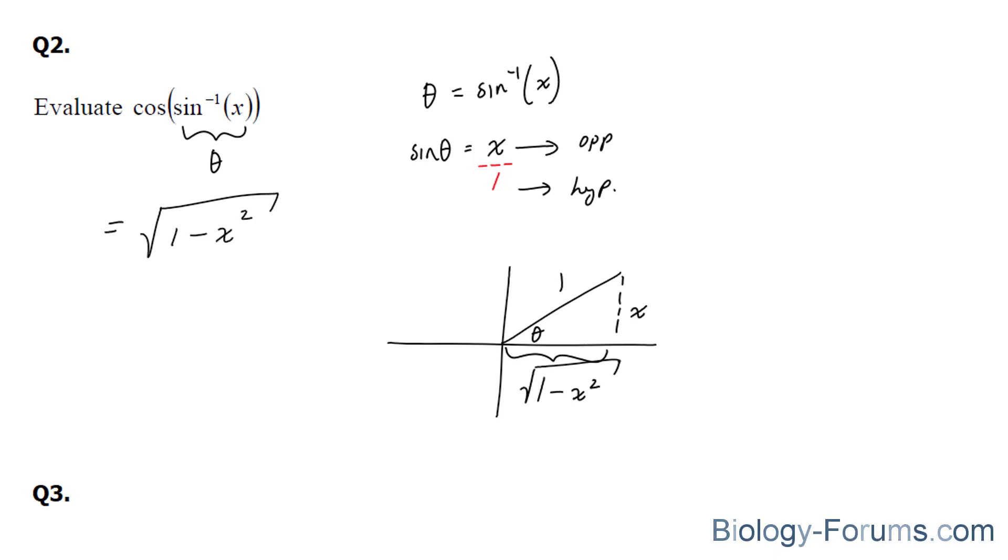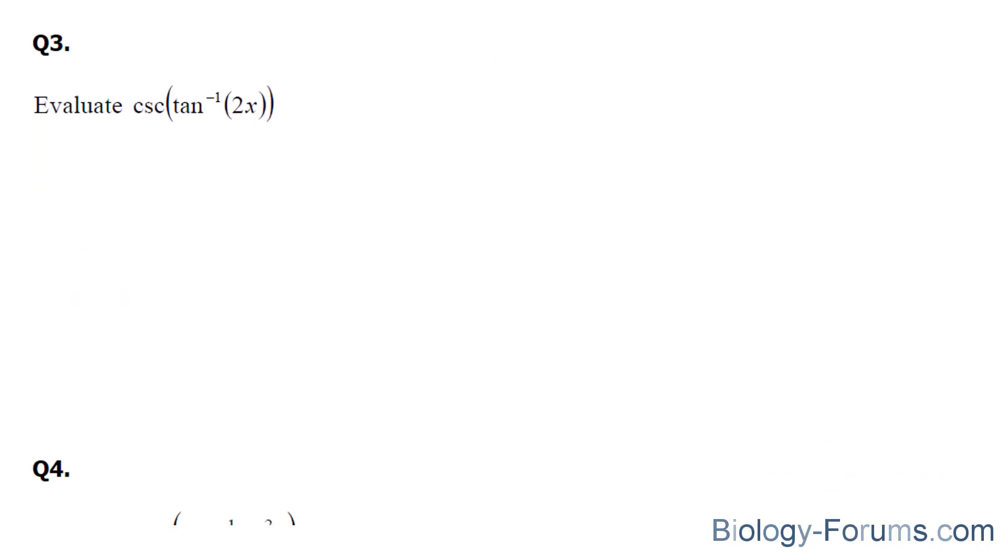Let's proceed on to question 3. This one is a little bit more difficult because of two reasons. One, we're using cosecant, which is 1 over sine, and we're using tangent.